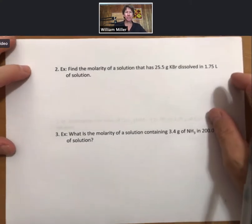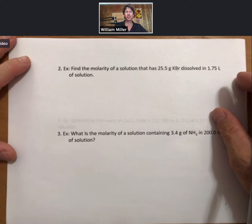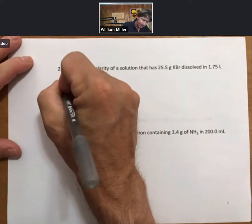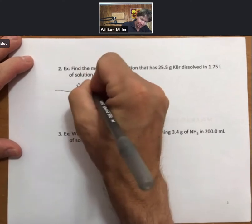Now questions you're going to see on homework are more like this. Find the molarity of a solution that has 25.5 grams of potassium bromide dissolved in 1.75 liters of solution. Calculations for this. Again, lots of ways to do them.